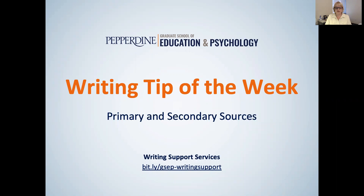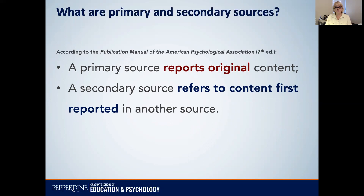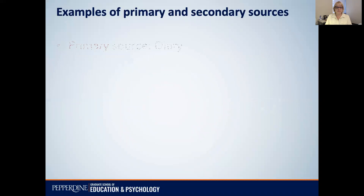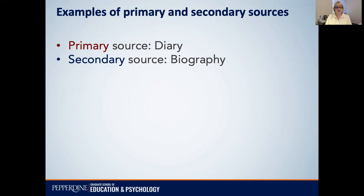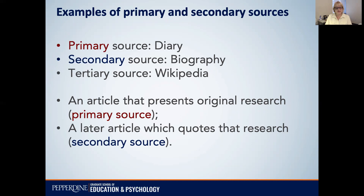First of all, a primary source reports original content, whereas a secondary source refers to content first reported in another source. For example, you might read a diary by Abraham Lincoln — that would be considered a primary source. Then, a secondary source would be a biography about Lincoln in which the author quotes from the diary. You could even have a tertiary source, a third level, like an encyclopedia entry or a page on Wikipedia, which might quote from both those secondary and primary sources. In academic writing, you might read an article that presents original research — that's a primary source — but you come across it when you read a secondary source, a later article which quotes that research.